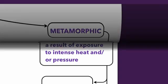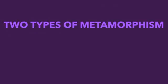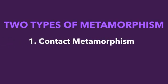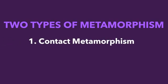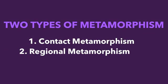There are two types of metamorphism that occur in nature. The first type is called contact metamorphism, and the second is called regional metamorphism. Let's talk a little bit about the difference between these two.